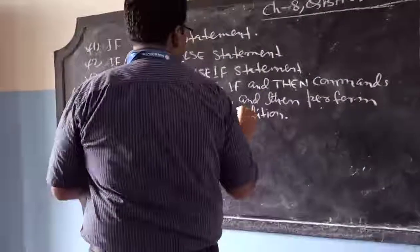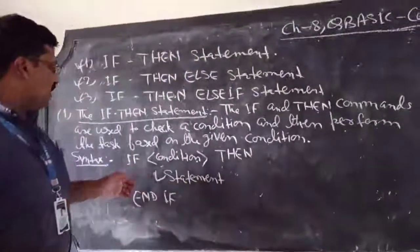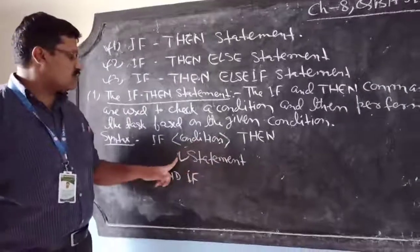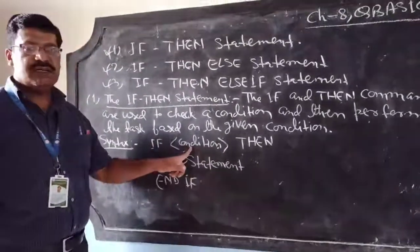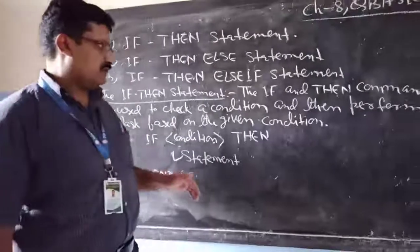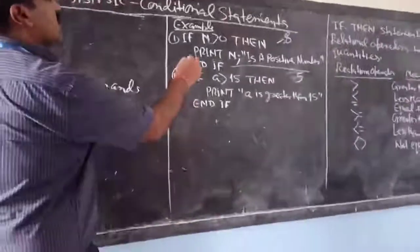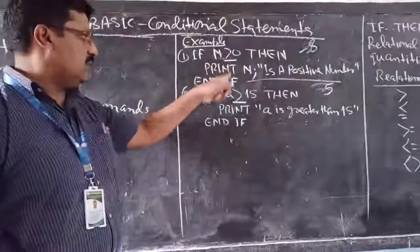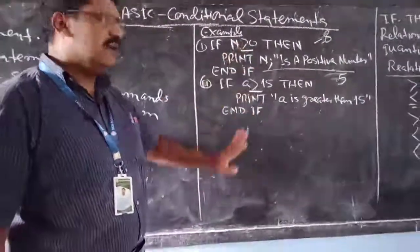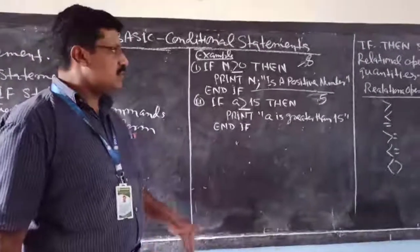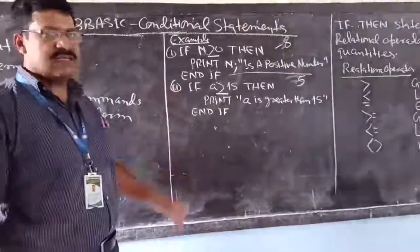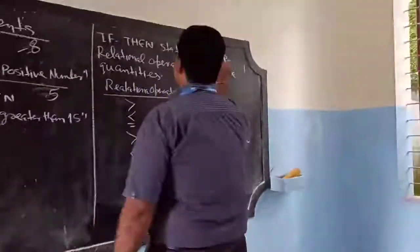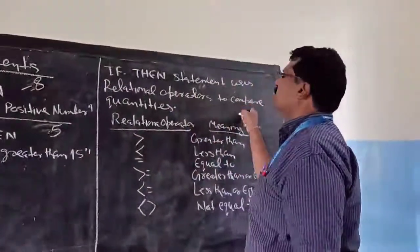So it is very simple. The IF-THEN statement checks the condition, and if the condition is true the following statement is executed; if false, nothing is executed. To check this condition we use the relational operator. We have six relational operators in QBasic. The IF statement uses relational operators to compare quantities.